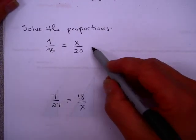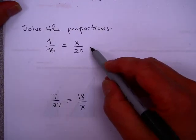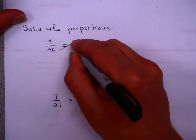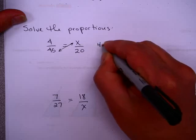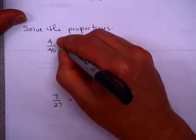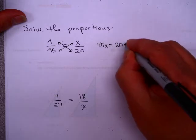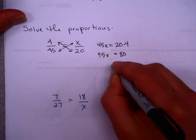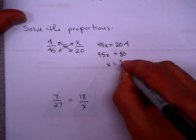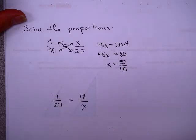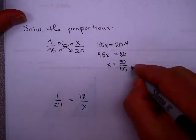Here's an example. Solve this proportion. If we believe that cross multiplication property, we can do 45 times x equals 4 times 20. So 45x equals 80 and x equals 80 over 45. You should reduce that fraction, 80 over 45, to 16 ninths.